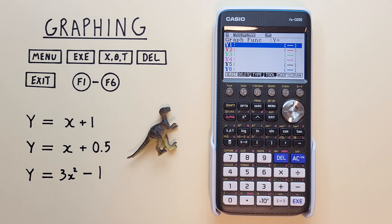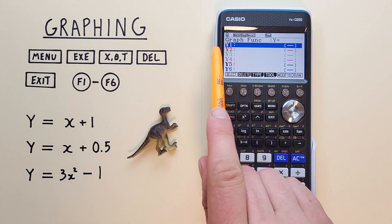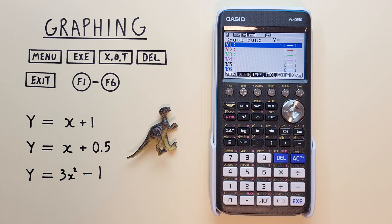We'll get started with a simple line. Let's enter y equals x plus 1. So we're at y1 already, and then we can enter x with the x key here, plus 1, and then hit the exe to finish that function. There we go. We've entered our first line.